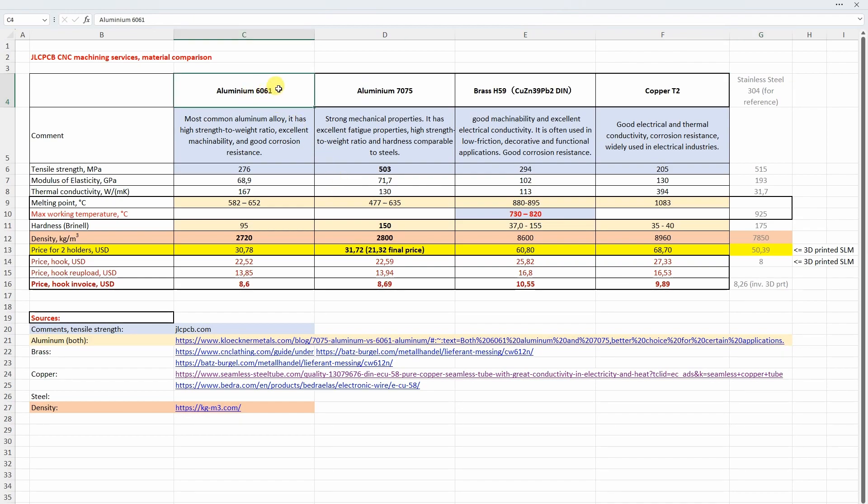Let's start with the 6061. This is the most common aluminum alloy and it has great strength to weight ratio and excellent machinability, good corrosion resistance.